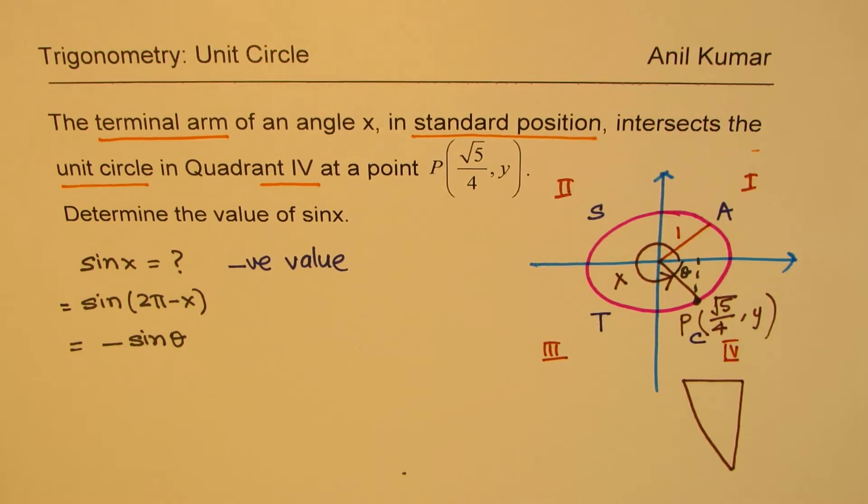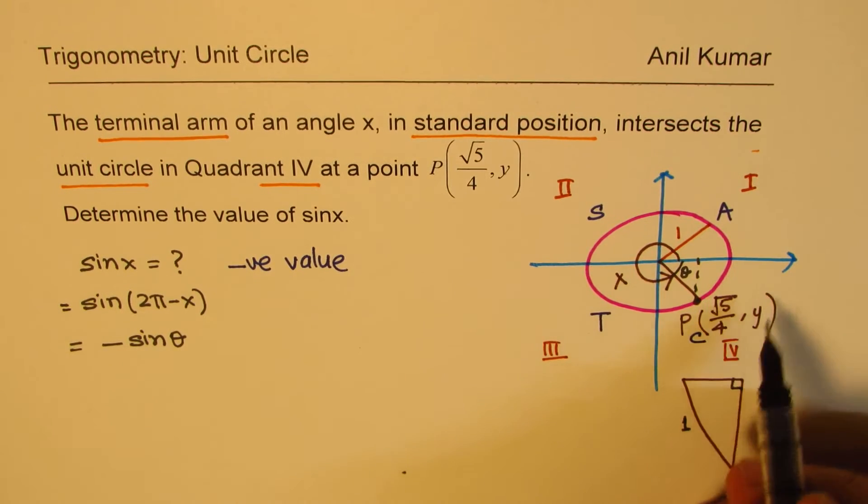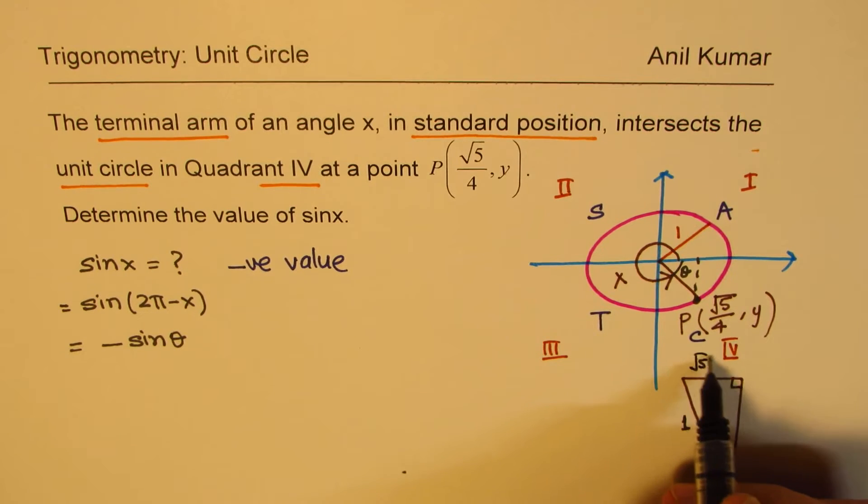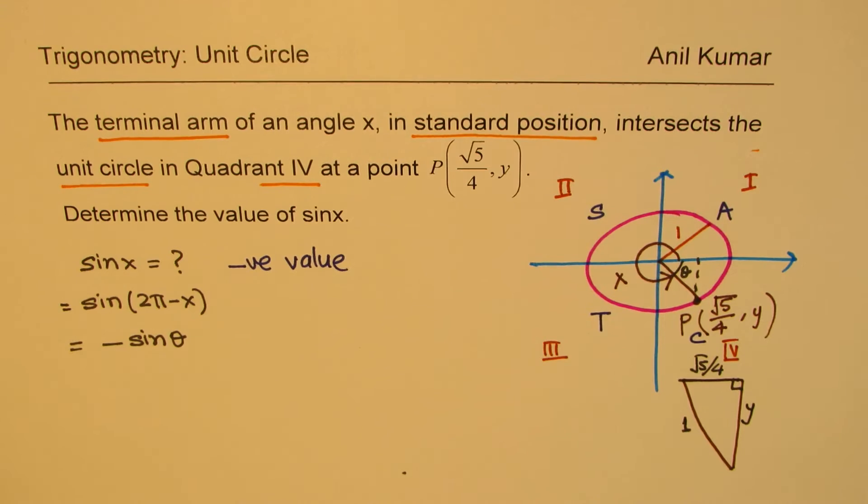So here, we know one thing for sure, which is unit circle means this is 1. This is 90 degrees. And X value means square root 5 over 4 is this dimension. We need to find what Y is.